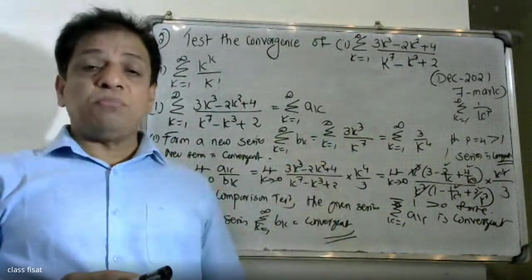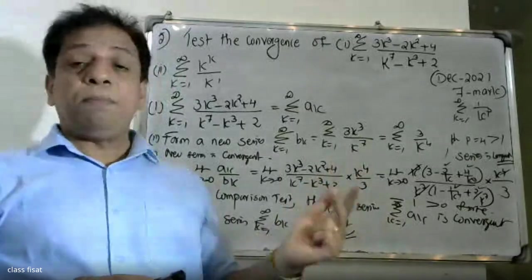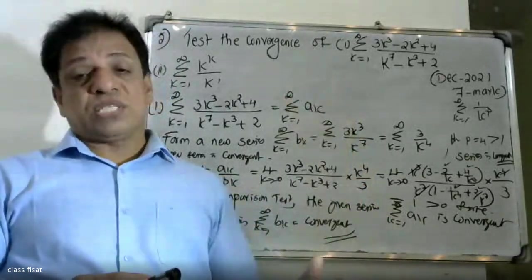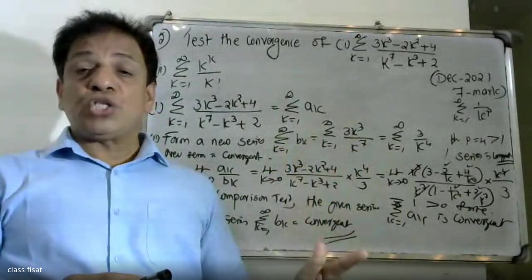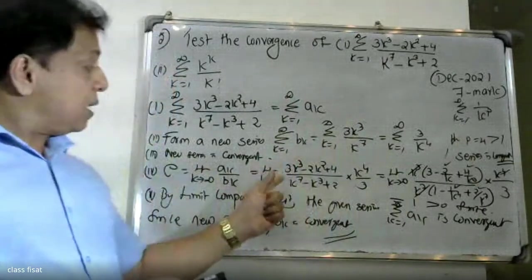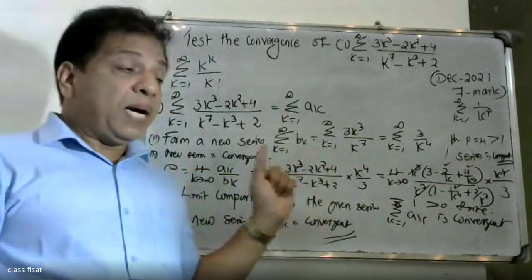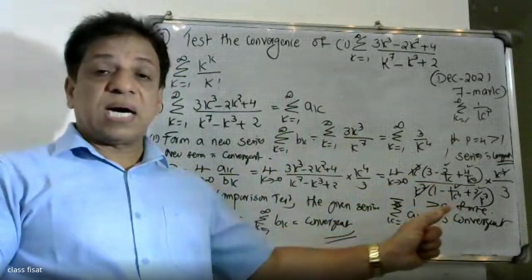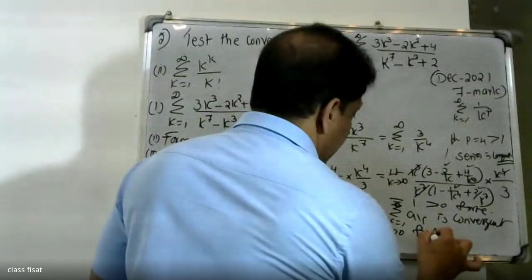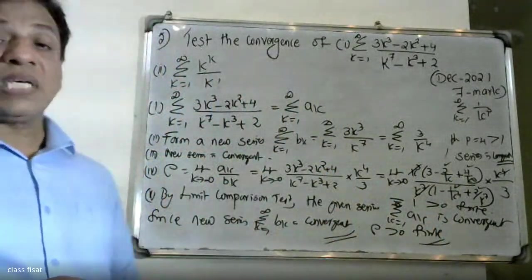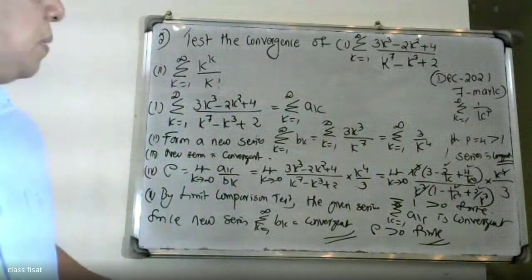The third point is that bₖ is a P-series. In this case the P-series is convergent. The P-series comparison gives us that since the new series Σbₖ converges, by the limit comparison test the given series also converges.